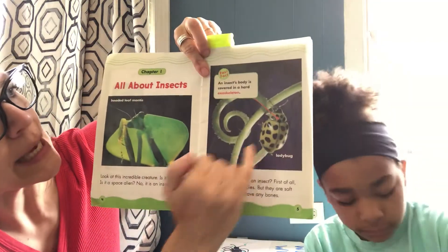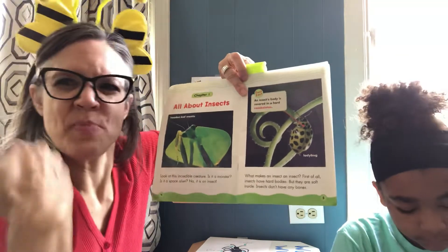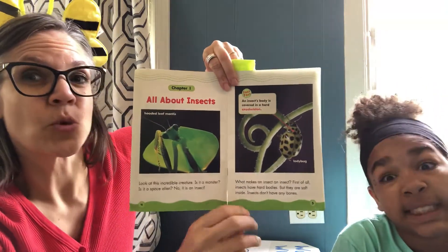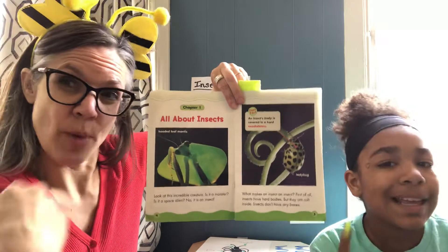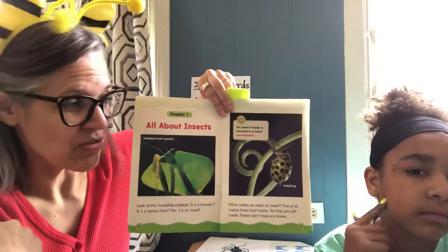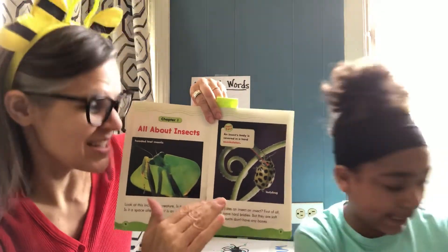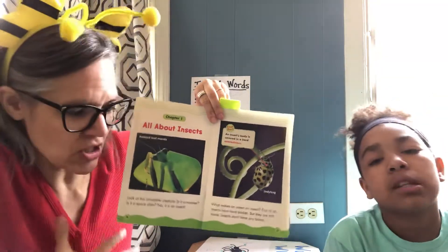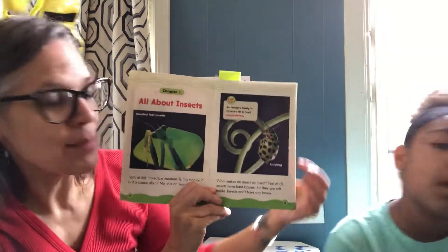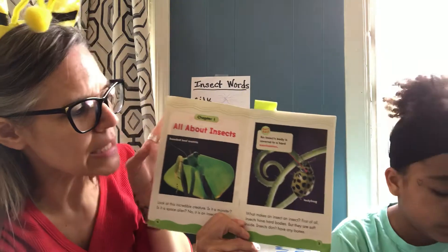First we're going to look at our little friend the ladybug. What makes an insect an insect? First of all, insects have hard bodies called an exoskeleton. Think about a skeleton — our skeletons, our bones, are inside our body. Can you feel your bones? They're inside, right? That's a skeleton. Theirs is on the outside — it's called an exoskeleton. It's like a hard shell to keep their soft, gooey insides nice and safe. They don't have any bones at all; they have a hard outer shell called an exoskeleton and soft, squishy bodies inside.